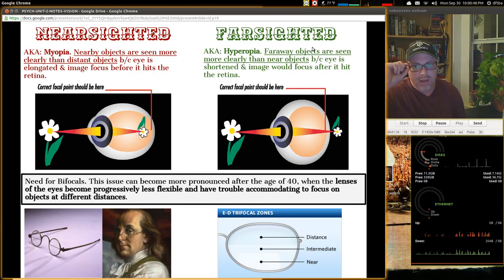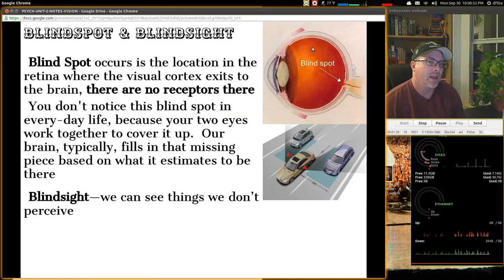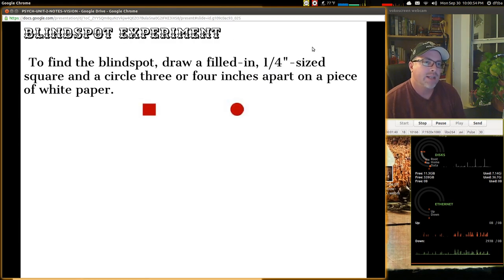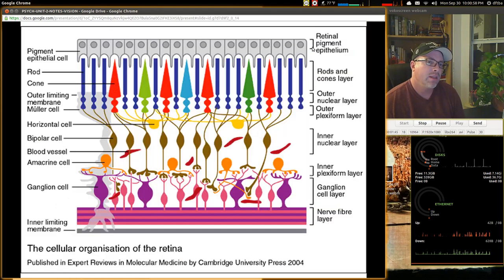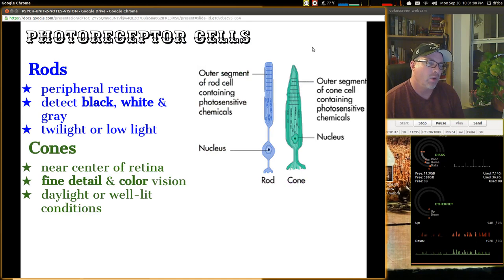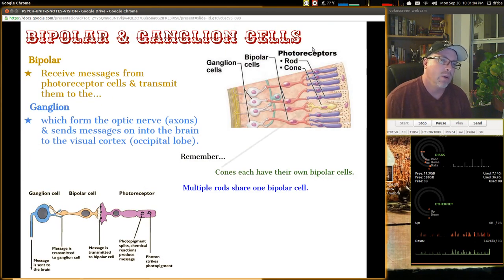Nearsightedness, farsightedness, and unfortunately, bifocalness. We looked at the strength of the eye, blind spots, and blind sight. We did the blind spot experiment. Looked at the fovea, the retina, cones, and rods, and ganglion, and bipolar cells.